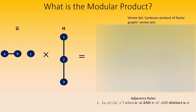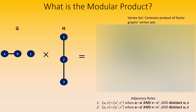The first rule is: a pair of vertices uv and u'v' in the modular product are adjacent when both their left and right entries are distinct and adjacent in their respective graphs. The second rule is: a pair of vertices uv and u'v' are adjacent when both their left and right entries are distinct and not adjacent in their respective graphs.